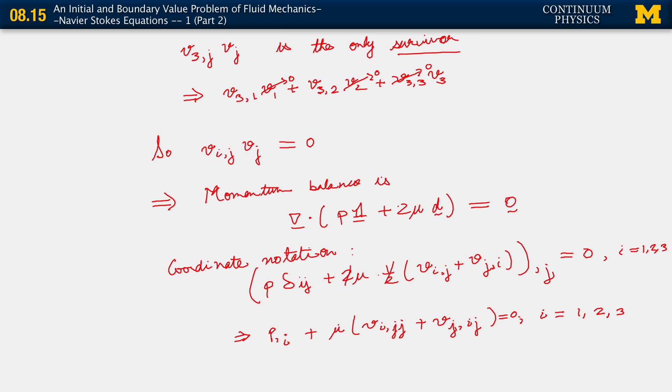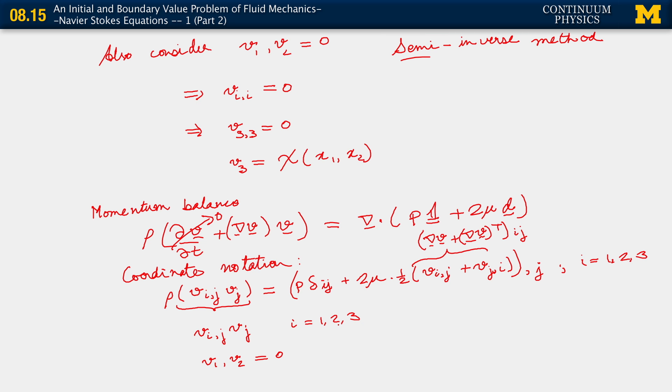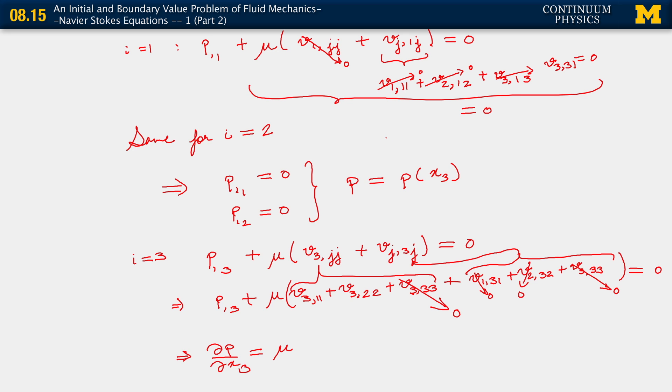So, truly the only equation we have left to solve is this one. Partial of p with respect to x_3 equals mu (v_3,11 plus v_3,22). But you recall that we'd set v_3 equal to chi. On a previous slide, let me just go back there, we made the observation. I think it's two slides back. Right, here we are. We made that observation. What that implies is that out here, this is the only term that survives. And this is chi,11 plus chi,22. Now that we'll write as chi,11 plus chi,22.